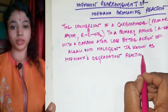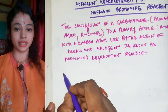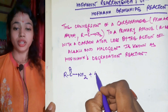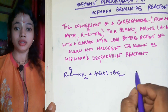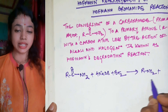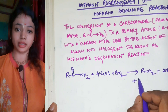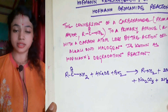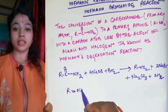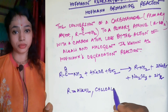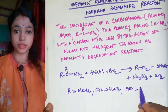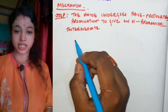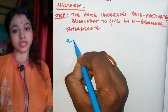If you take R-C(=O)-NH2 and react it with sodium hydroxide (NaOH) and bromine (Br2), you will get R-NH2, along with NaBr, Na2CO3, and two molecules of water. There is also formation of sodium bicarbonate and sodium bromide. The R group can be alkyl, cycloalkyl, or similar groups.